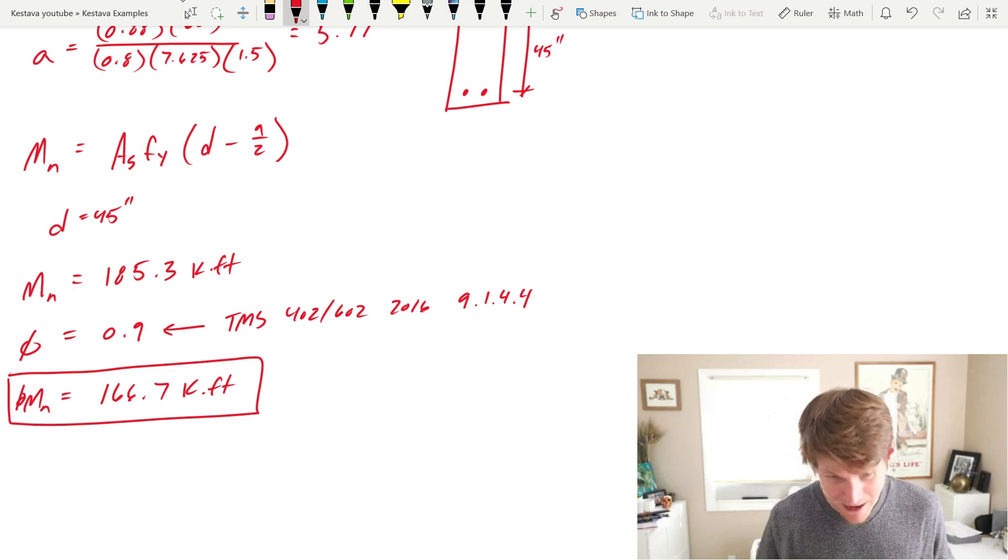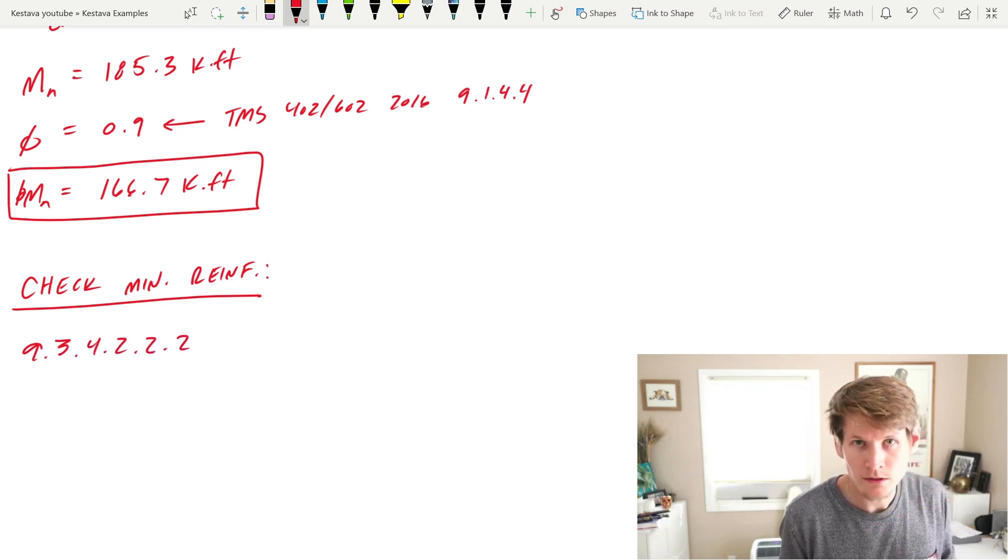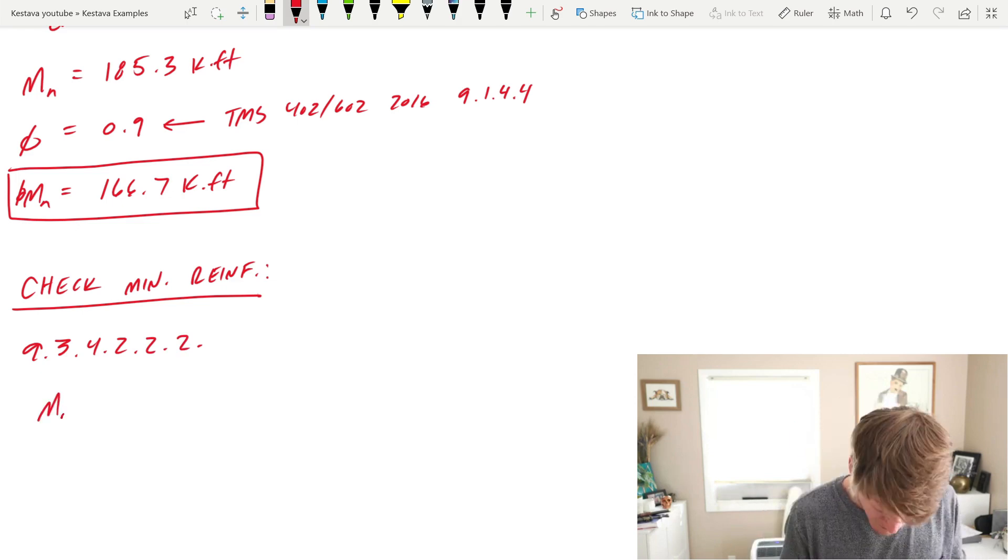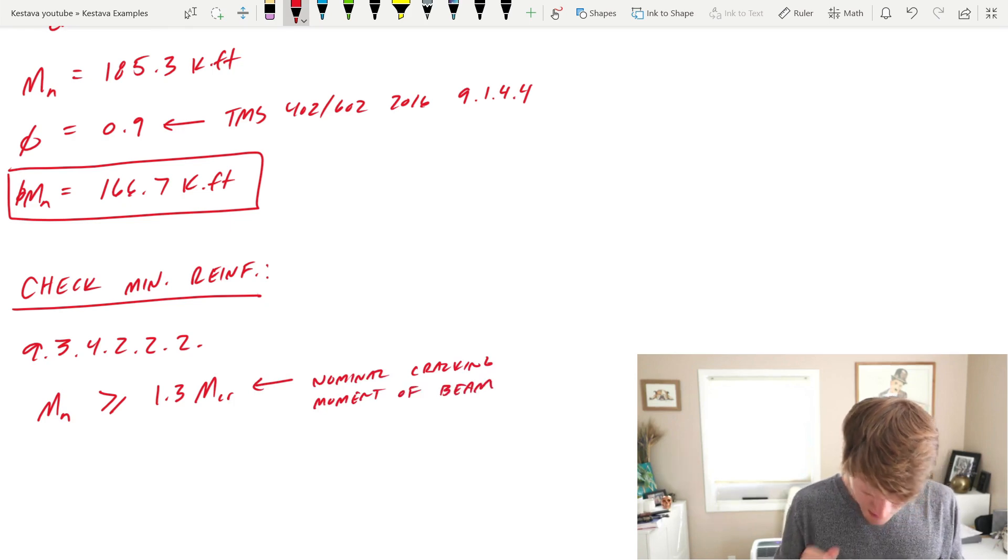Alright. Well, we've determined the capacity of the masonry beam, but now let's check for minimum steel reinforcement and maximum steel reinforcement and make sure we're within code guidelines because that's another huge thing. It's not just about strength. There's also all these other parameters that go along to make sure that we are designing safe, efficient structures. And of course I have the TMS out again, but this is per 9.3.4.2.2. MN, which we solved for, must be greater than or equal to 1.3 times MCR. MCR being the nominal cracking moment of the beam. And now you're like, what's MCR?